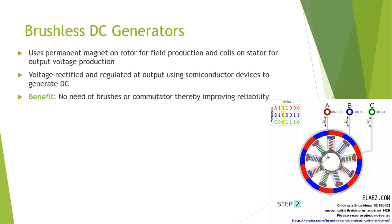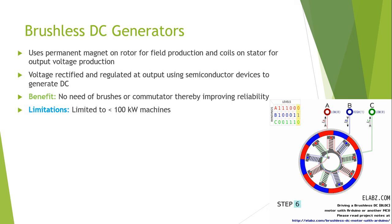The benefit of using a brushless DC generator is that there is no need for brushes or a commutator, which improves reliability. The limitation associated with brushless DC motors and generators is a power limitation of less than 100 kilowatts.